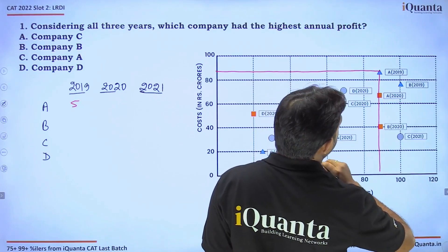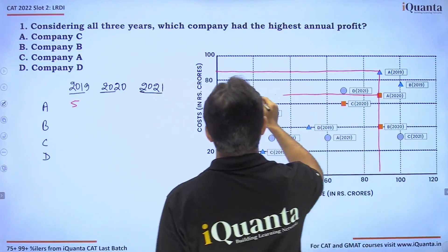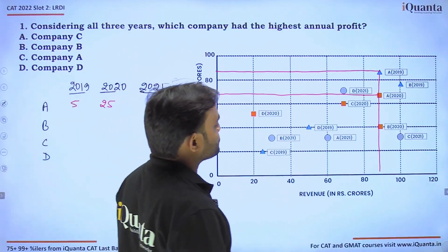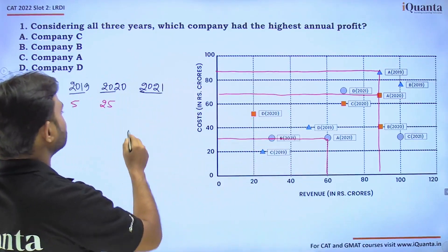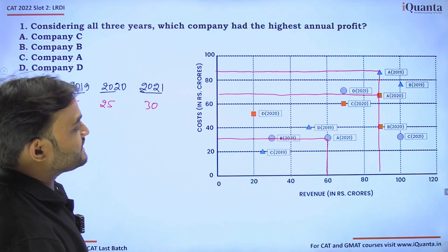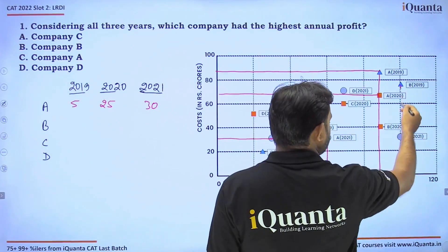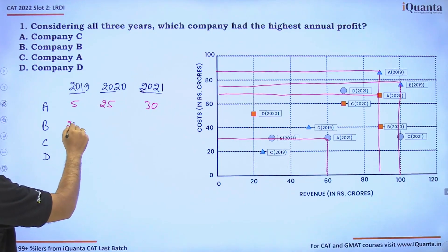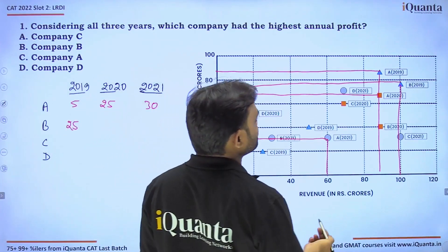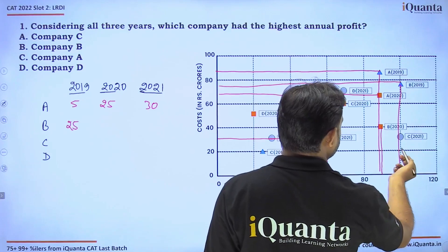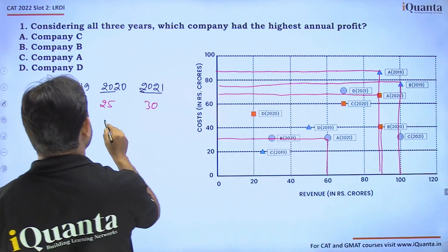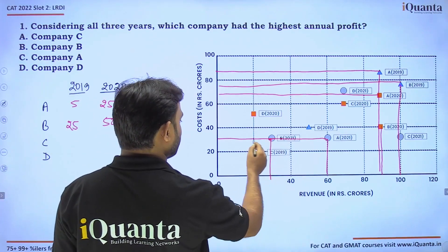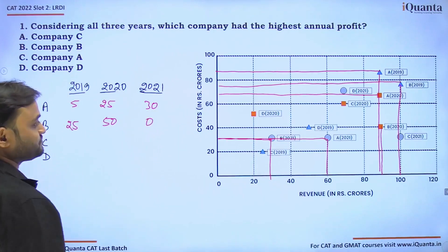For A in 2021, it's 60 minus 30, which equals 30 crores. For B in 2019, it's 100 minus 75, giving 25 crores profit. For B in 2020, it's 90 minus 50 which is 50 crores. For B in 2021, revenue and cost are both 30, so zero profit.